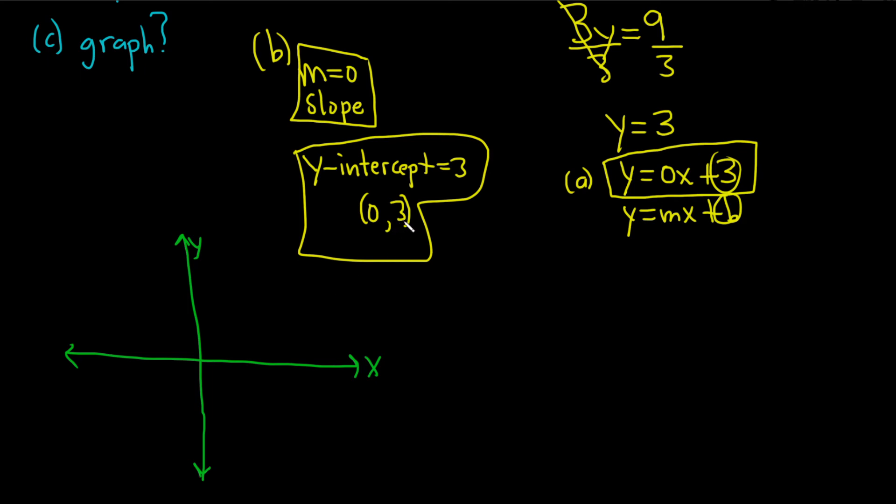So the y-intercept is 0, 3, so we would go right 0 and up 3 from the origin. So 1, 2, 3.